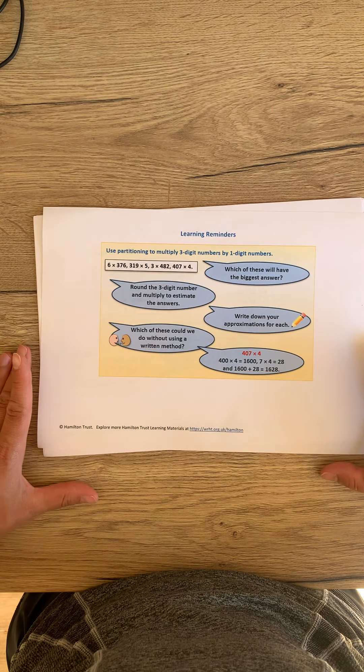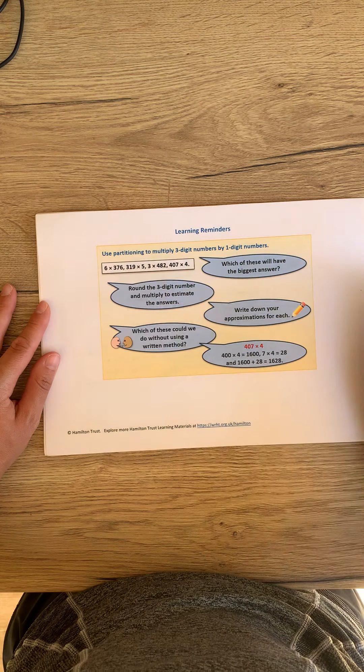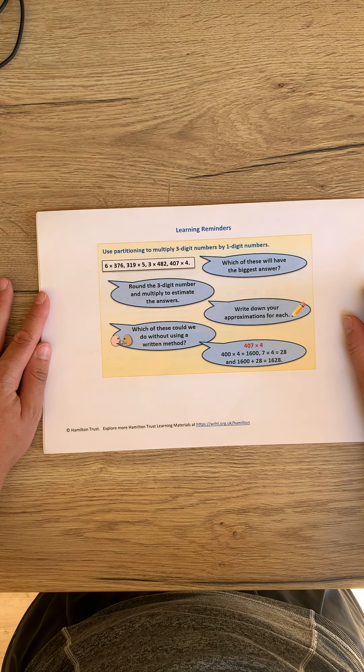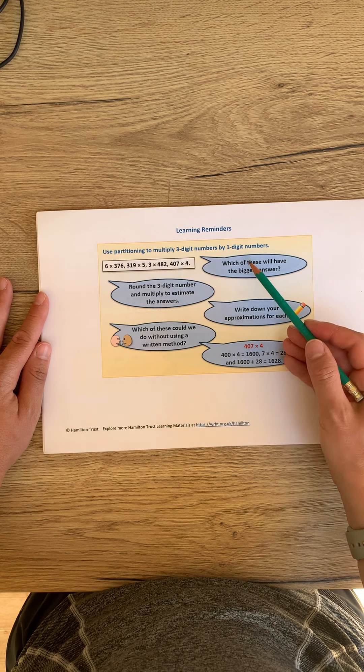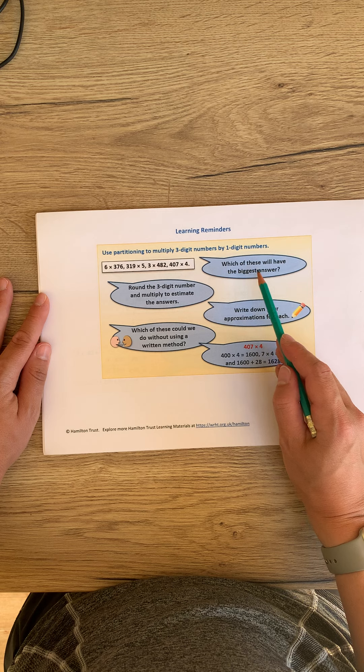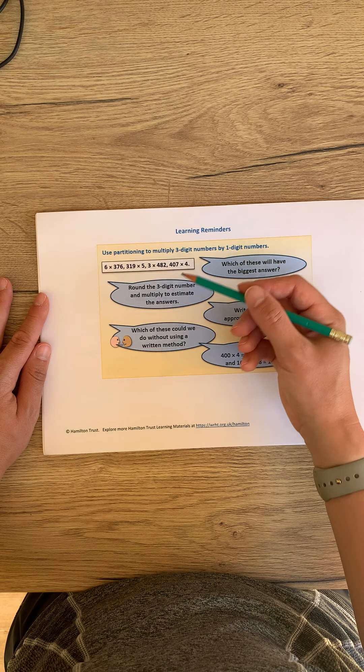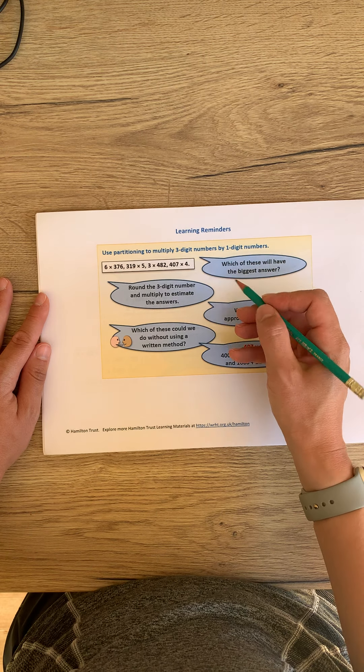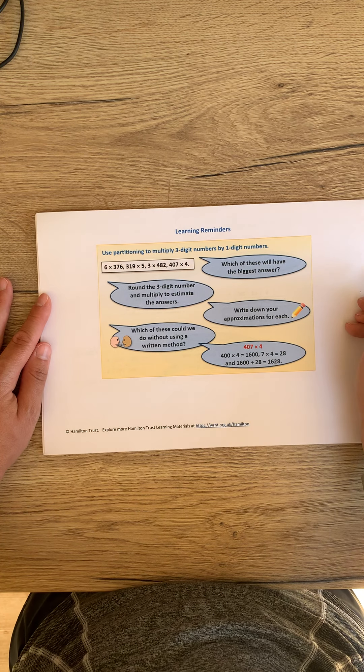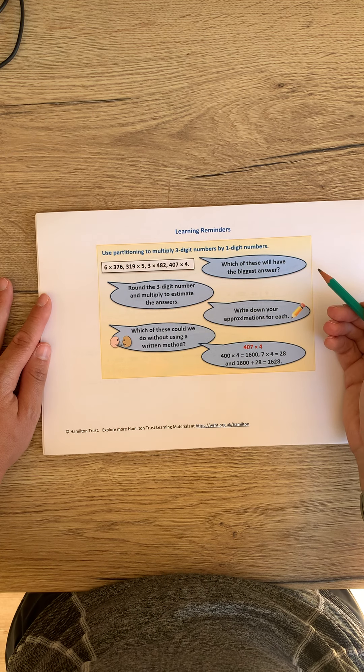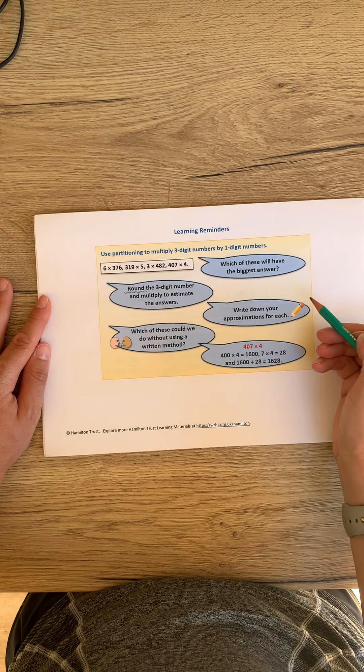To start with today, the first learning reminder is giving you four number sentences, all three digits multiplied by one digit. There's a couple of questions here asking which of these will have the biggest answer. It's asking you to estimate what your answer is going to be before you go about using the grid method to find what the actual accurate answers might be. And in order to make good estimations, using rounding of the three-digit number to estimate.